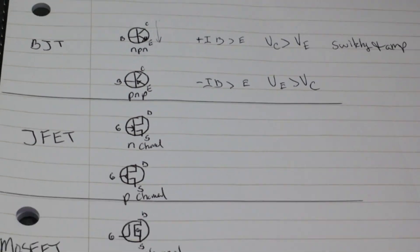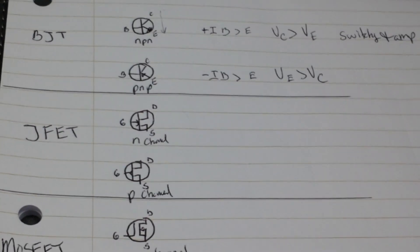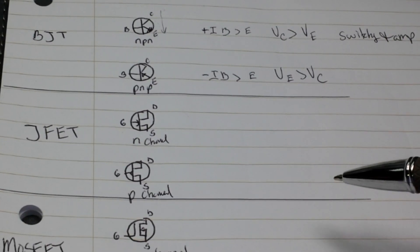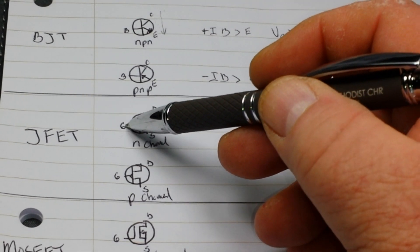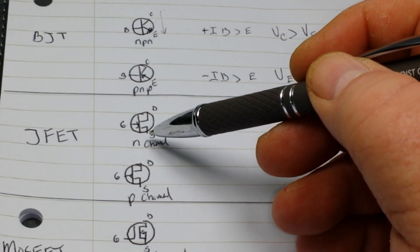Alright, let's move on and talk about JFETs. Now, the first JFET we'll talk about is an N channel and this is a FET we have gate, drain, and source.